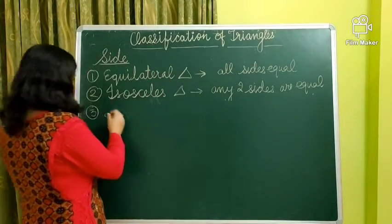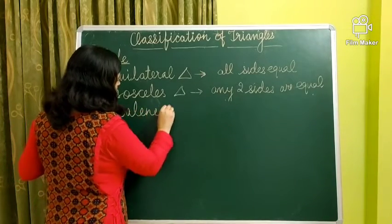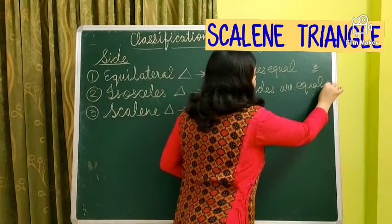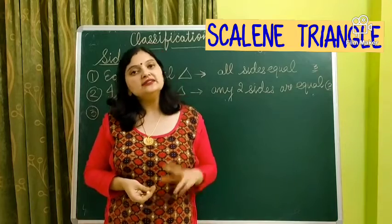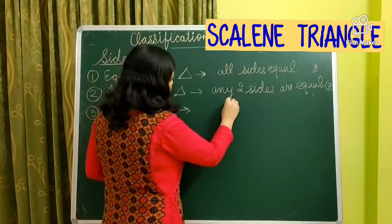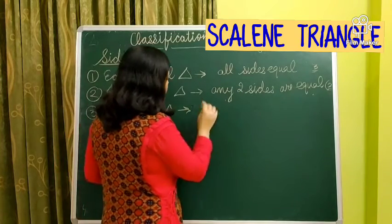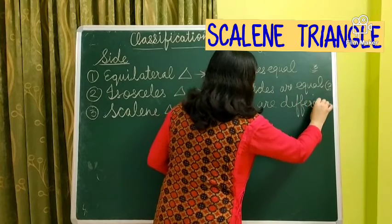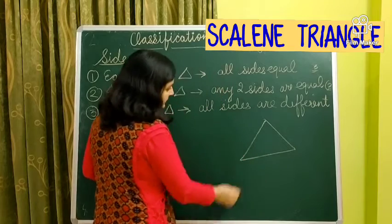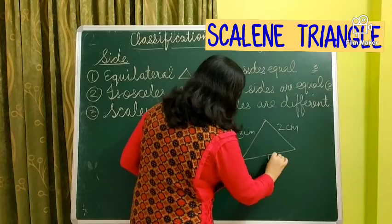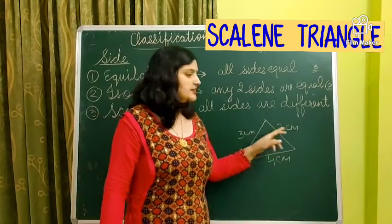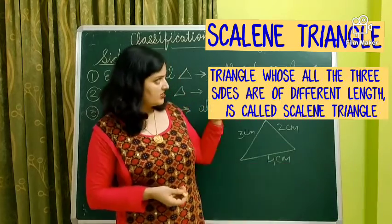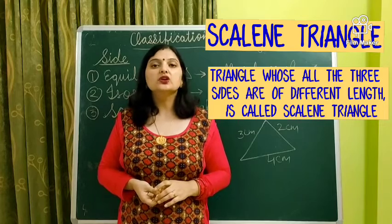The third one is scalene triangle. In the first case, all three sides are equal in length. In the second case, any two sides are equal in length. Now in this case, all three sides are different. Scalene triangles are those triangles whose all sides are different. For example, sides of 3 cm, 2 cm, and 4 cm — all three sides are different. Such triangles are known as scalene triangles. A triangle whose all three sides are different in length is called a scalene triangle.